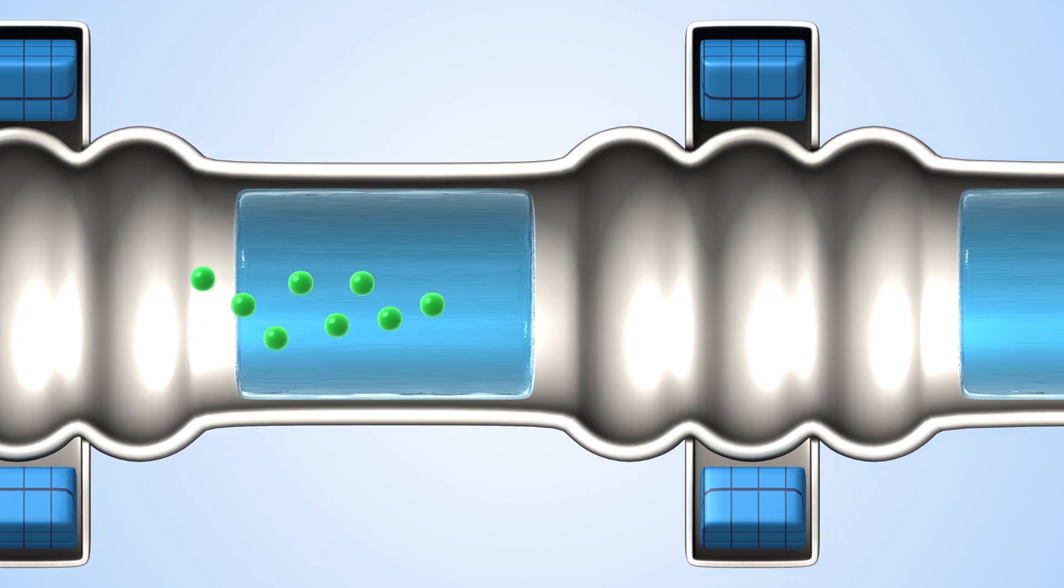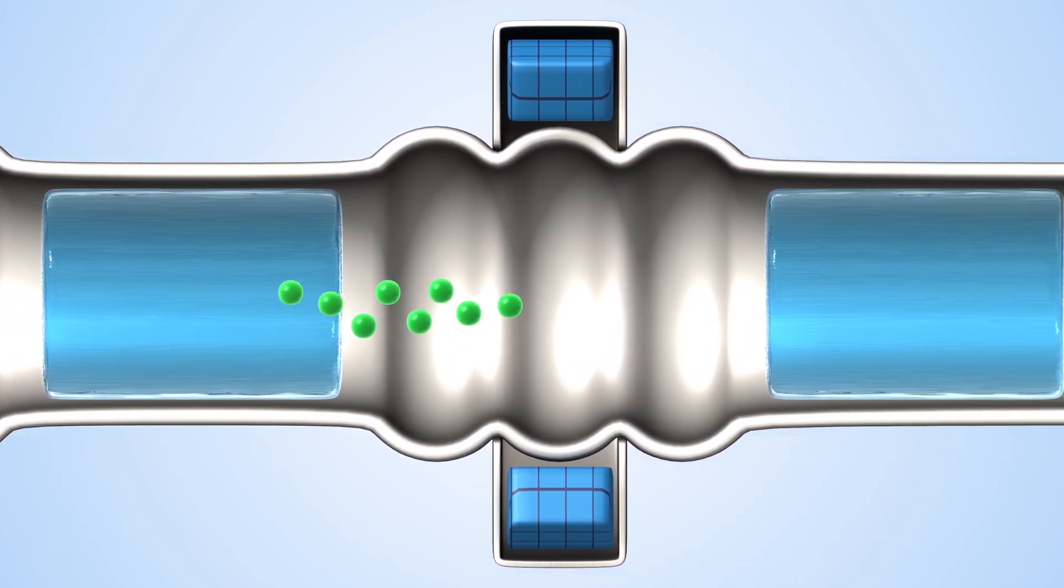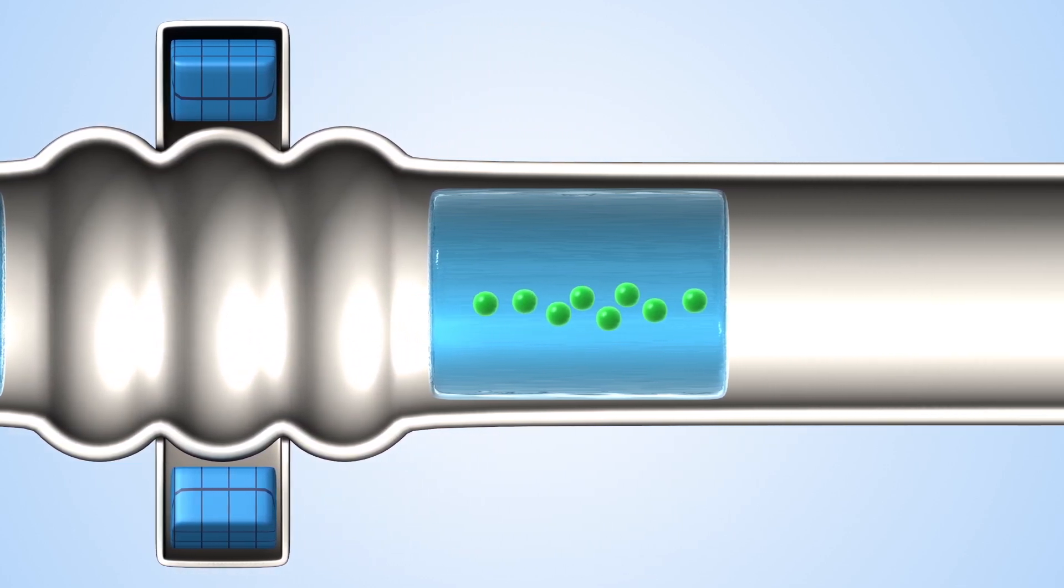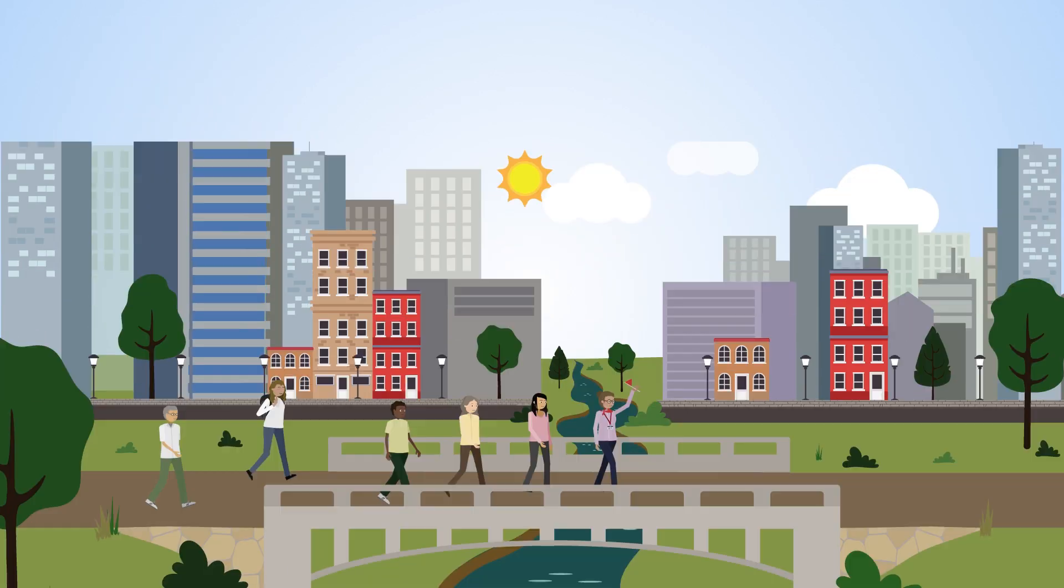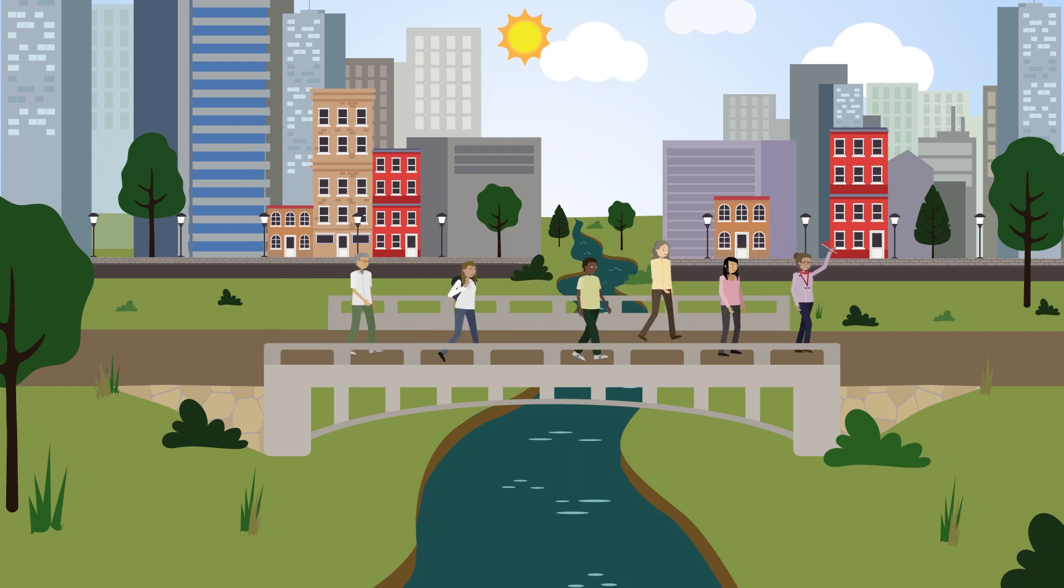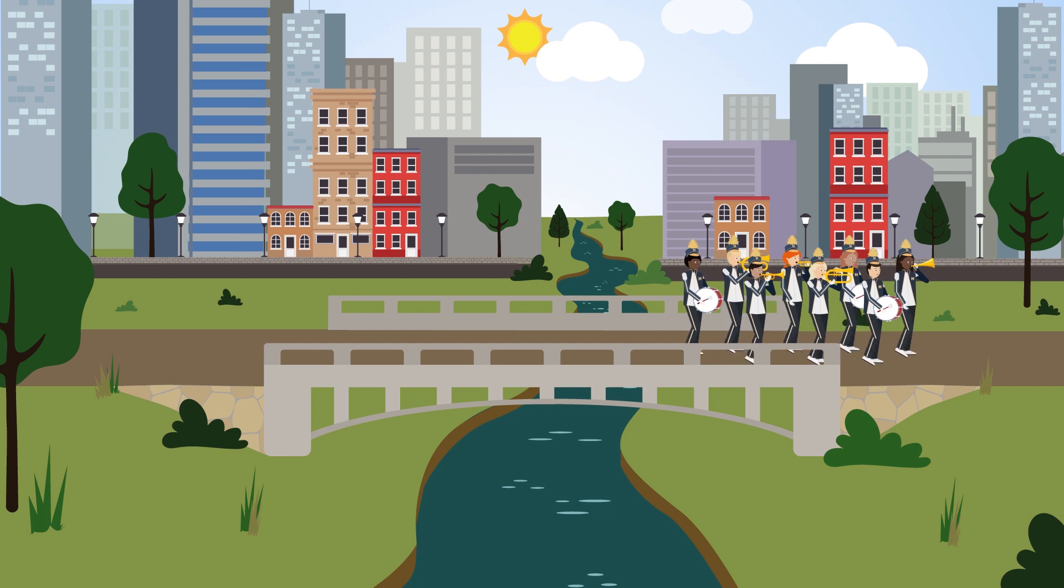These last steps are repeated, squeezing the muon clouds to smaller and smaller diameters until eventually the beam is narrow and intense like a laser and ready to be injected into a particle accelerator. After this treatment, the muon cloud looks less like a group of sightseers crossing a bridge and more closely resembles an orderly marching band.